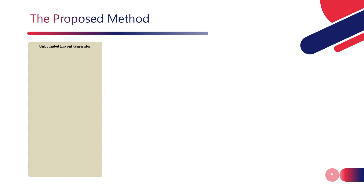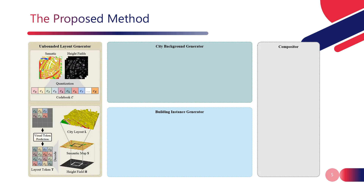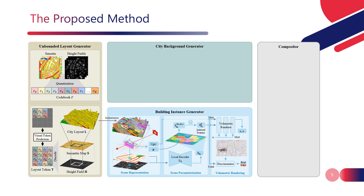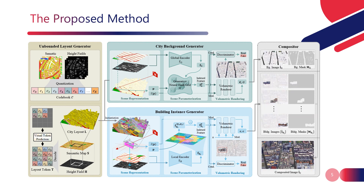CityDreamer comprises four modules: an unbounded layout generator, a city background generator, a building instance generator, and a compositor. The unbounded layout generator, based on MaskGIT, firstly generates the semantic maps and height fields by infinite image extrapolation. Next, the building instances and other background objects, such as roads, green lands, and water areas, are generated by the building instance generator and the city background generator. Finally, the compositor merges the rendered background and building instances into a single cohesive image.